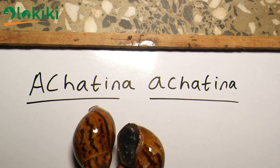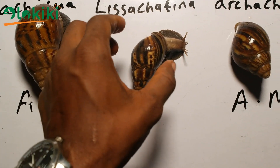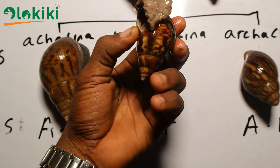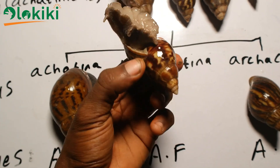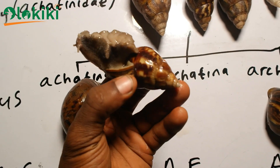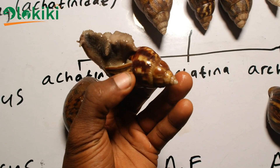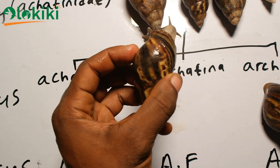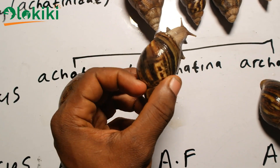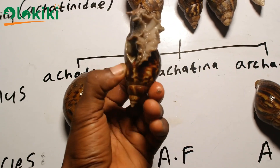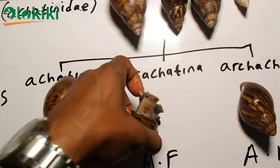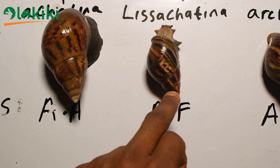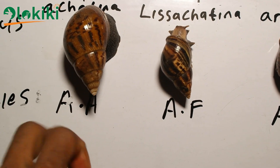Moving on to the second species, the Achatina fulica shares similar characteristics with the Achatina achatina, also possessing a pointed tip on the shell. The major difference is that they don't grow as big as the Achatina achatina, but they lay similar numbers of eggs when compared to the Achatina achatina.